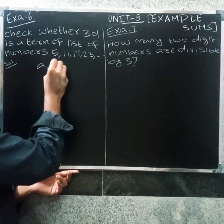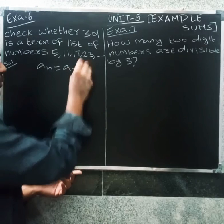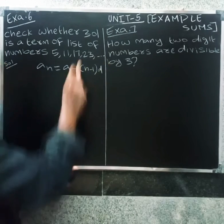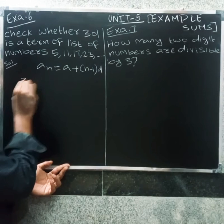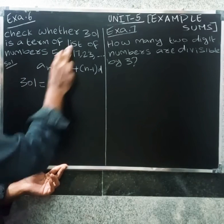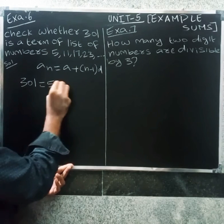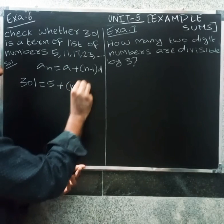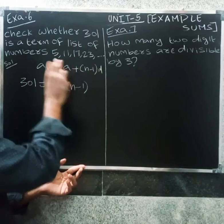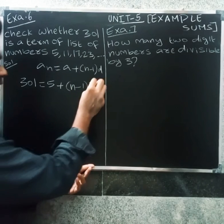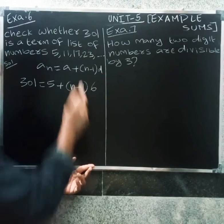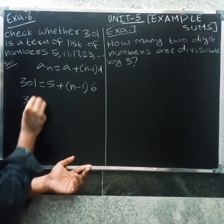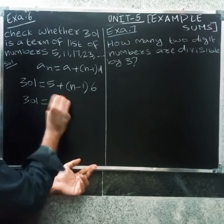Using the formula aₙ = a + (n−1)d, we set 301 equal to a value of 5 plus (n−1) times d. The common difference is 11 minus 5 = 6, and again 17 minus 11 = 6. So 301 = 5 + (n−1)×6.